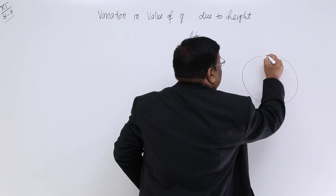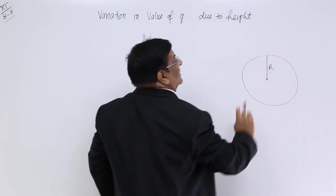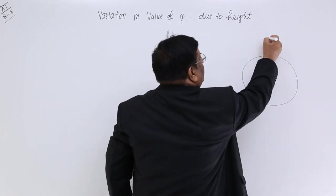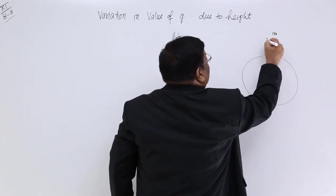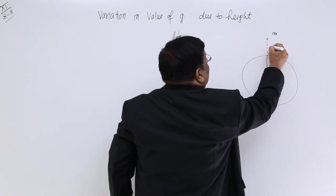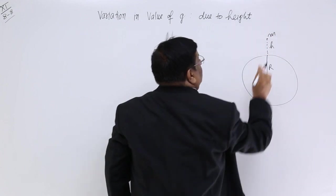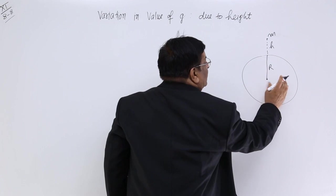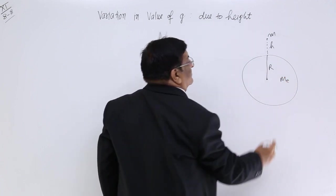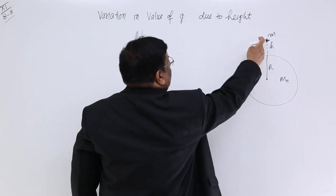This is the surface of the earth. From the center, it is at a distance of radius of the earth. Suppose there is an object here which has got a mass m and it is at a height of h. Now, we know mass of the earth, we take as mass of the earth. How much should be the force between the two?